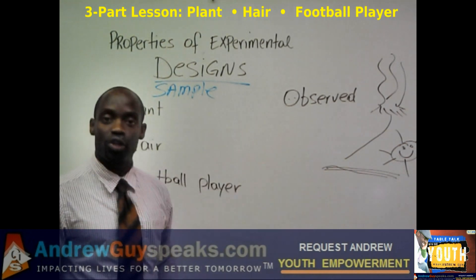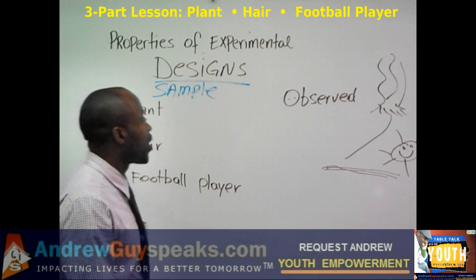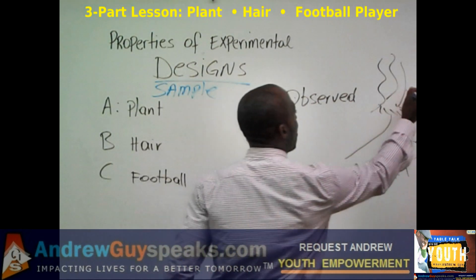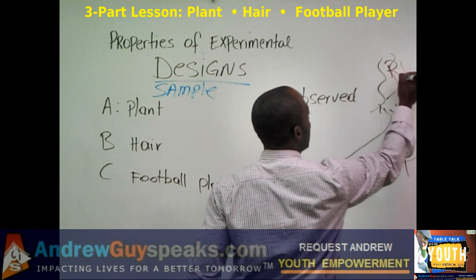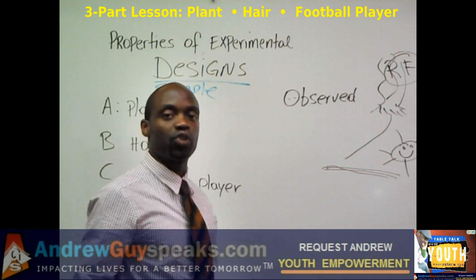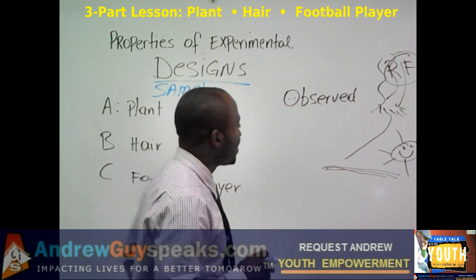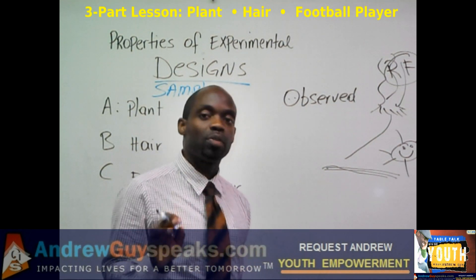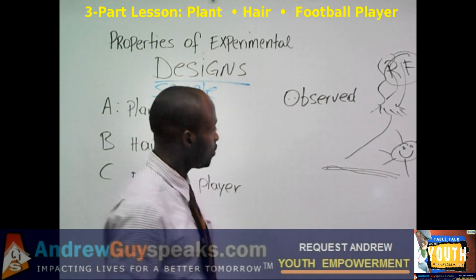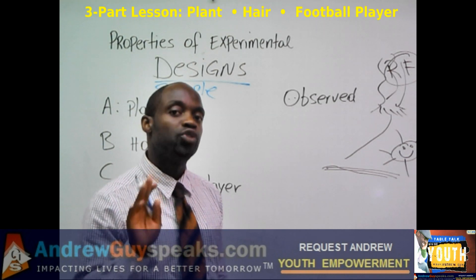First thing we want to do is observe. So we're going to look at the plant in its natural habitat, which is the rainforest — we'll put R.F. We're looking at the plant in the rainforest, and it was thriving. Everything was going well. But something happened — we took the plant, uprooted it, and put it in the desert. Something strange happened, so now we've got to observe again.